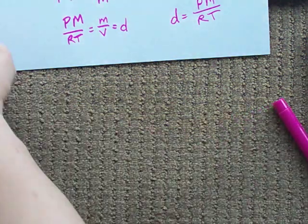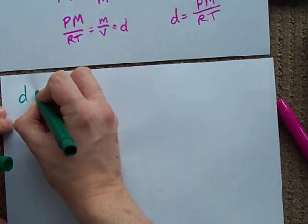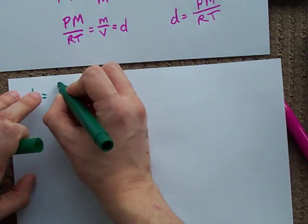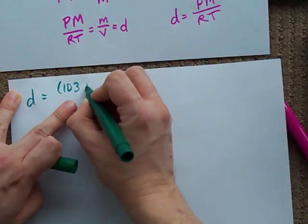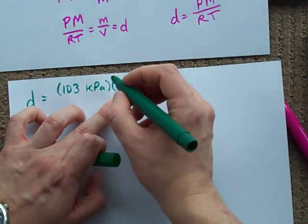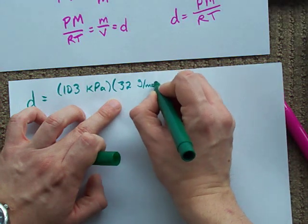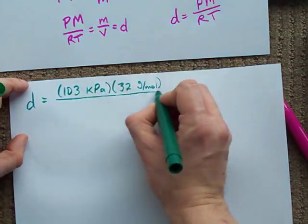So, let's do it. The density is pressure, that's 103 kilopascals, times molar mass. For oxygen, that's 32 grams per mole.